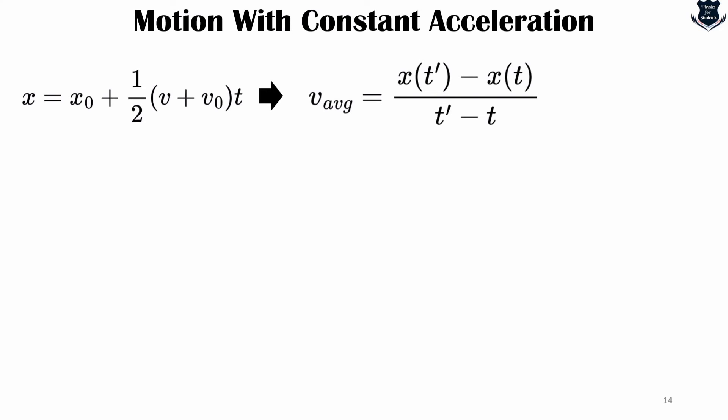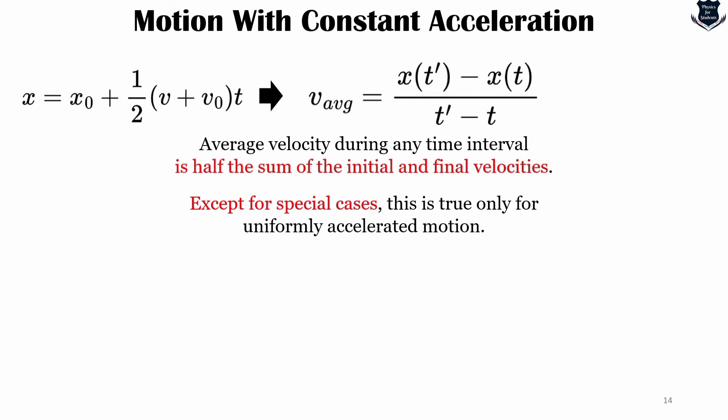If we compare these two equations, x = x₀ plus half of this and v = average, then what we see is that the average velocity during any time interval is half the sum of the initial and final velocities. This is approximately true for any special case. That is why I am comparing these two equations, because it comes to a kind of rule that for any time interval the average velocity will always be half of the sum of the initial and final velocities, except for special cases which we are not considering here.